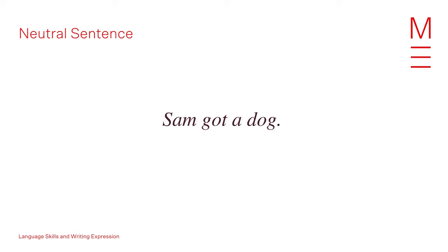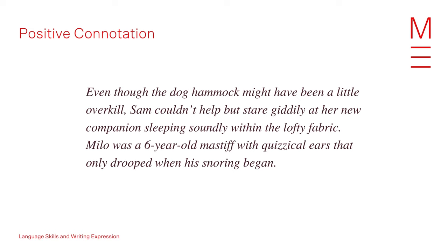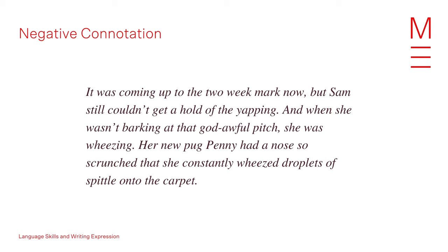Before we move on to vocabulary, let's look at two storytelling sentences with vastly distinct tones. We'll start with a neutral sentence: 'Sam got a dog.' Now let's look at that through a positive connotation: 'Even though the dog hammock might have been a little overkill, Sam couldn't help but stare giddily at her new companion sleeping soundly within the lofty fabric. Milo was a six-year-old mastiff with quizzical ears that only drooped when his snoring began.' And finally through the negative connotation: 'It was coming up to the two-week mark now but Sam still couldn't get a hold of the yapping, and when she wasn't barking at that god-awful pitch she was wheezing. Her new pug Penny had a nose so scrunched that she constantly wheezed droplets of spittle onto the carpet.'